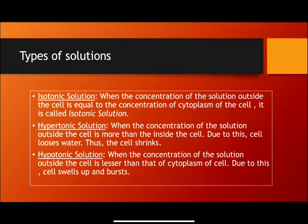Hypertonic solution is when the concentration of the solution outside the cell is more than inside the cell. Due to this, the cell loses water and shrinks. The concentration outside is more, and the concentration inside the cytoplasm is less, so water rushes outside the cell. When the amount of water reduces, the cell shrinks — that process is called the hypertonic solution effect.